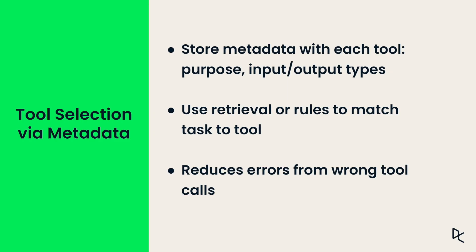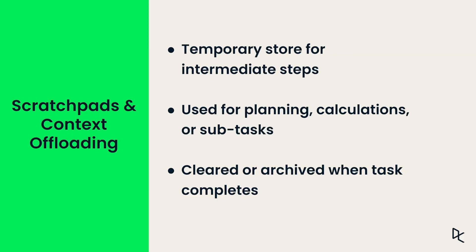Tool selection via metadata helps the model pick the right tool. Each tool has metadata — that is, its purpose, input types and output types — and the system retrieves the best match for your task, reducing mistakes like calling the wrong API. Scratch pads give the model a temporary workspace to store immediate reasoning, calculations or planning steps; they are cleared once the task is complete. Think of these as sticky notes for AI models.